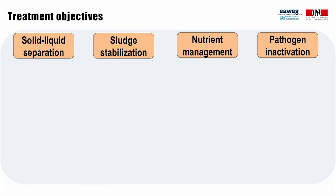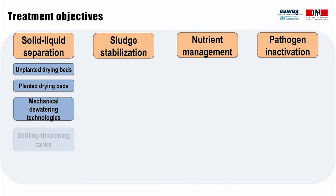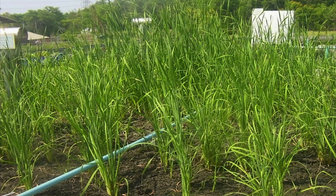Technologies for solid-liquid separation include drying beds, mechanical dewatering technologies, and settling thickening tanks. These technologies are designed to separate solids and liquid material in fecal sludge. For example, on this planted drying bed in Thailand, sludge is loaded on the surface of the sand filter layer. Solids remain on the surface of the filter layer, while liquid passes through and is collected at the bottom in a drainage network for further treatment.